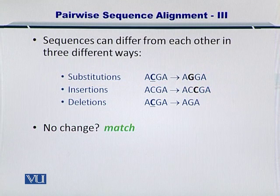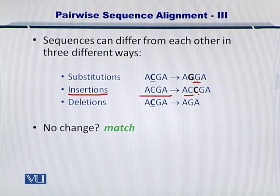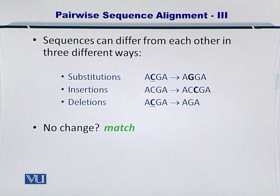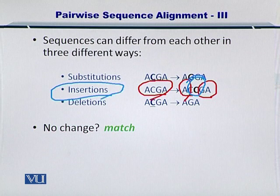Next, let's take a look at insertions. If you have a sequence ACGA and you're comparing it with another sequence ACCGA, then you can see that there is an extra C here, and this is an insertion. So the two sequences will match very nicely except for this C in the middle. This is an insertion.